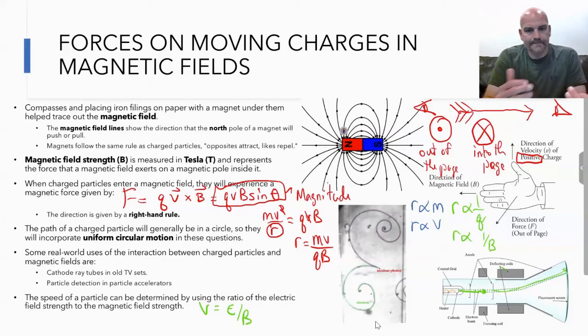Another way you can determine the speed, especially if you have the electric field, is just the ratio of electric field to magnetic field strength. So let's look at an example problem pertaining to this equation and these relationships.